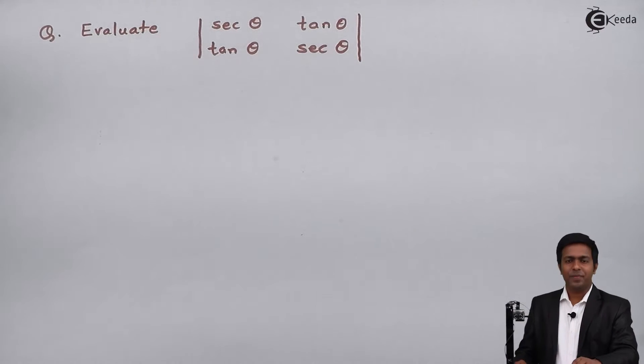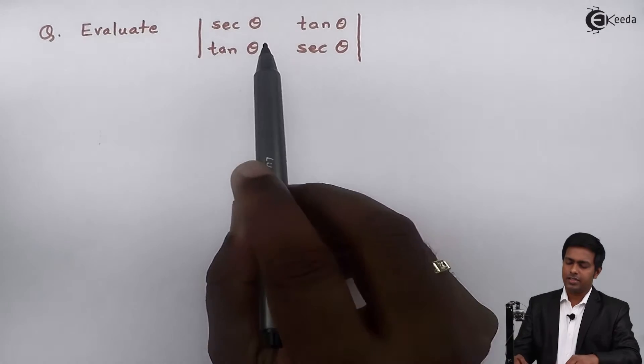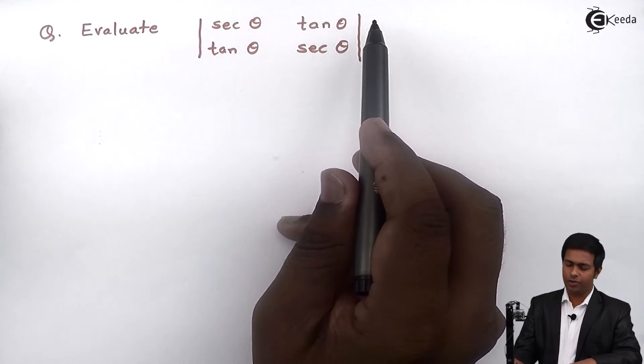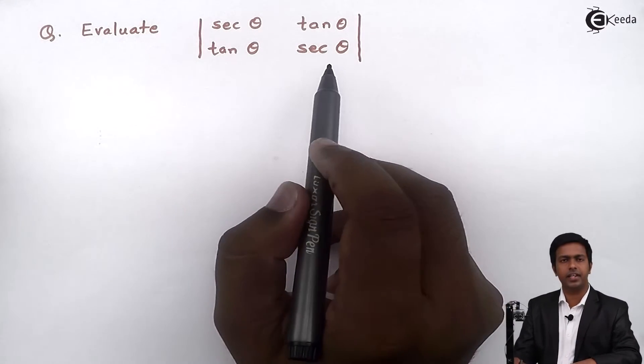Hello everyone, so here in this problem we have to evaluate a 2 by 2 order determinant where the values are sec theta, tan theta in the first row and tan theta, sec theta in the second row.